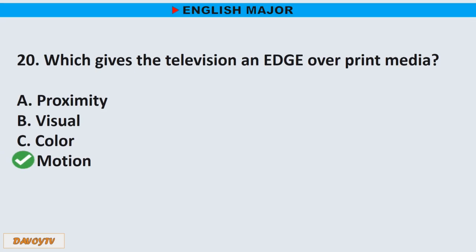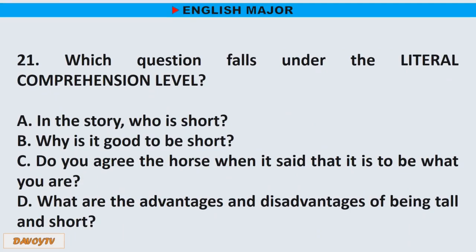Question number 21. Which question falls under the literal comprehension level? A. In the story, who is short? B. Why is it good to be short? C. Do you agree with the horse when it said that it is good to be what you are? D. What are the advantages and disadvantages of being tall and short? The correct answer is letter A. In the story, who is short?